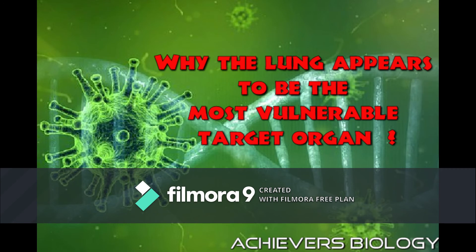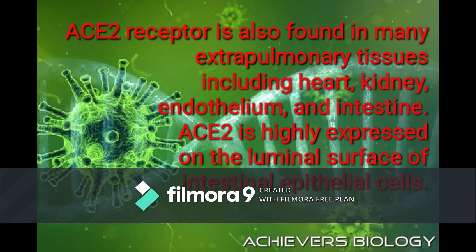A key question arises: why does the lung appear to be the most vulnerable target organ? First, the lung has a vast surface area that is highly susceptible to inhaling the virus. Second, in adult lung tissue, approximately 83% of ACE2-expressing cells are present — specifically alveolar type 2 epithelial cells — making it a reservoir for viral inhalation. Third, ACE2-expressing cells have a high level of multiple viral process-related genes, including regulatory genes, viral life cycle genes, viral processes, viral assembly, and viral genome replication.